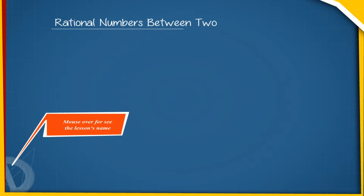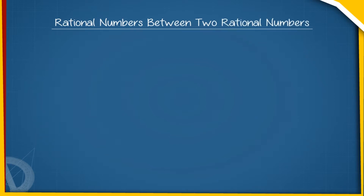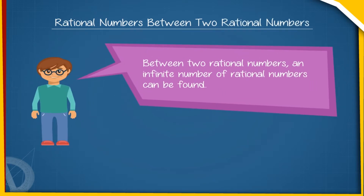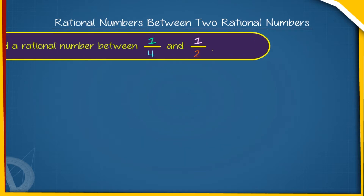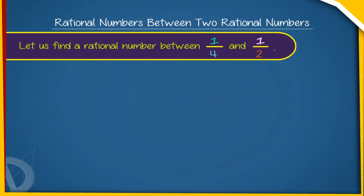Rational Numbers Between Two Rational Numbers. Between two rational numbers, an infinite number of rational numbers can be found. If A and B are two rational numbers with A less than B, then A plus B divided by 2 is a rational number such that A is less than A plus B divided by 2, which is less than B.